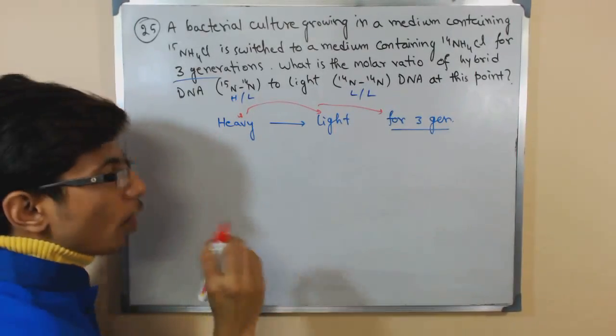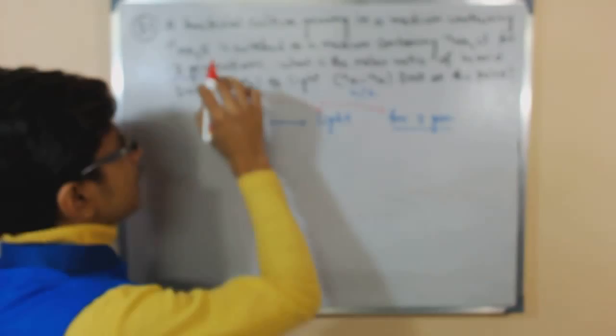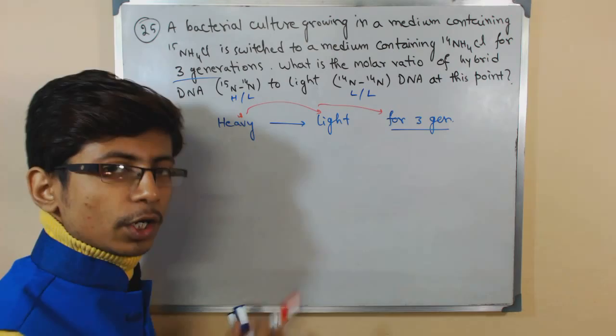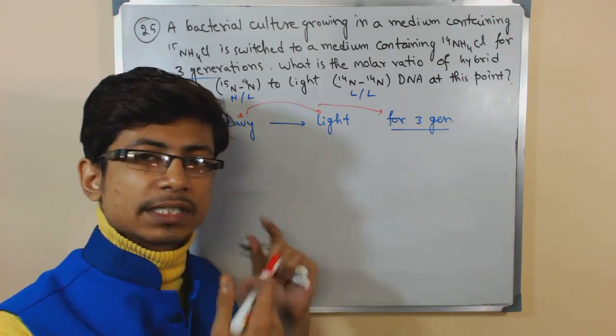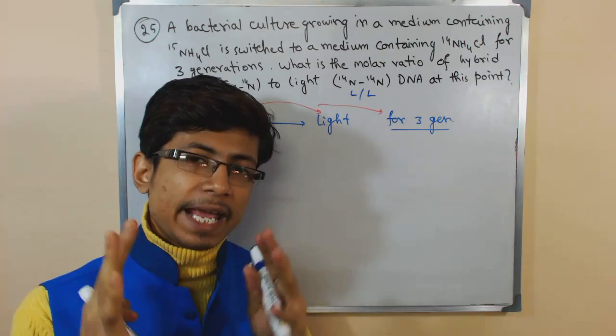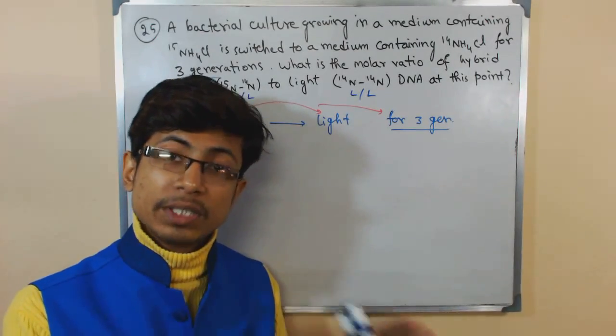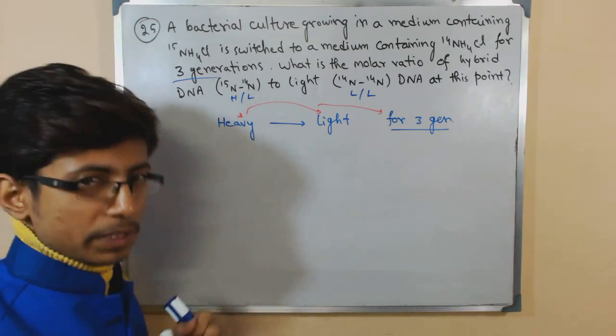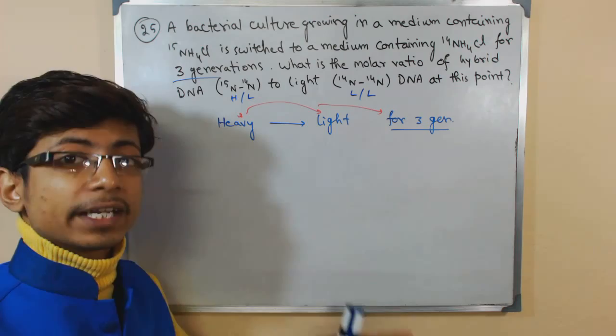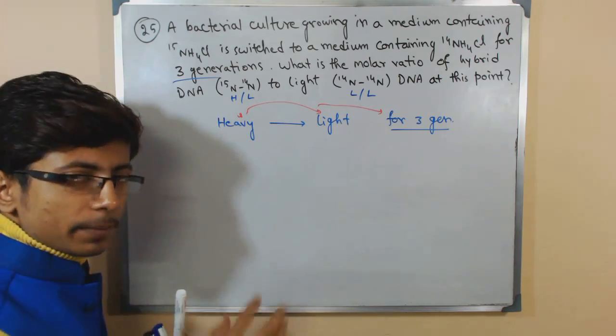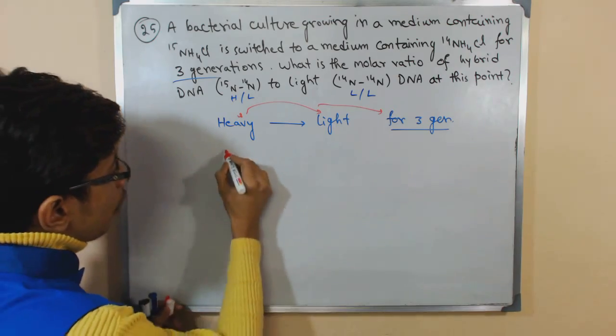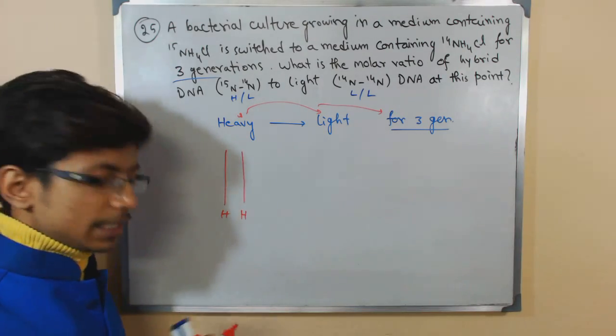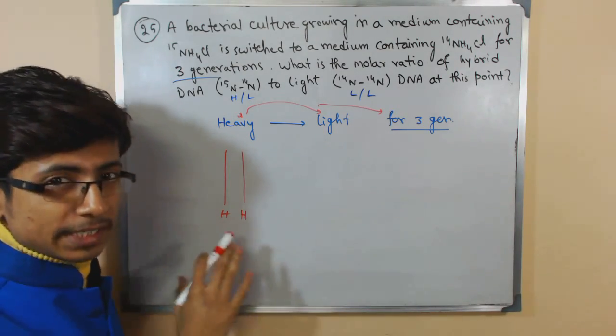So let's start with heavy. Once the bacteria is placed in the heavy nitrogen containing media, all of its DNA content will have this heavy molecule incorporated. Because bases require nitrogen and they will be added from the media, and if the media contains heavy nitrogen it will be added to the DNA. So in this case, bacteria growing in the heavy medium, both the strands will be heavy in nature. Both the strands are heavy.